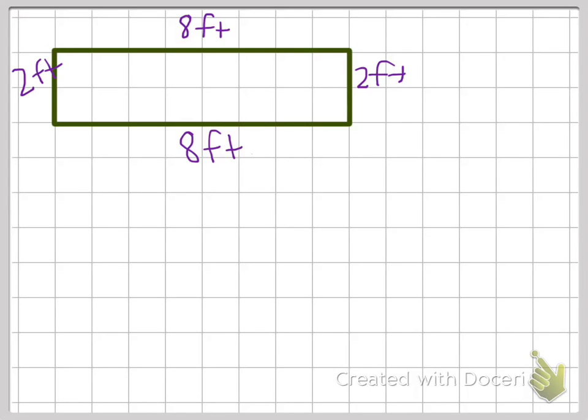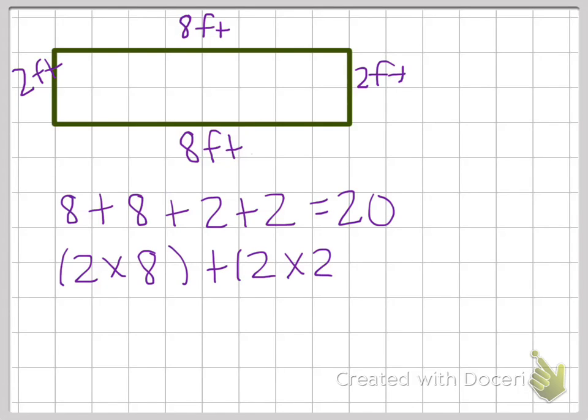To find the perimeter, I need to add all the sides up. So eight plus eight plus two plus two. Eight and eight is sixteen. Two and two is four. And sixteen plus four equals twenty. I could also say two times eight plus two times two equals twenty.